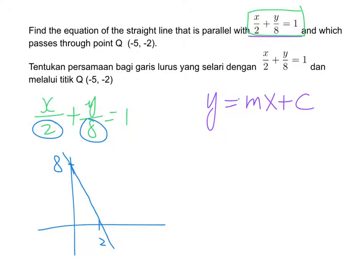Right, so the gradient is the ratio of the vertical distance to the horizontal distance. Vertical distance is 8, horizontal distance is 2. And since it is slanting down, it is negative. The gradient is negative.